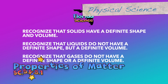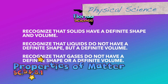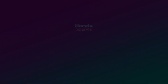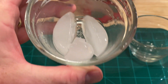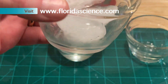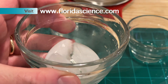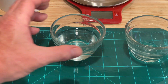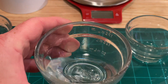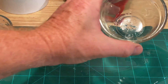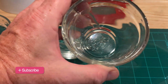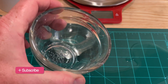Recognize that solids have a definite shape and definite volume. Recognize that liquids do not have a definite shape but have a definite volume. Recognize that gases do not have a definite shape or a definite volume.